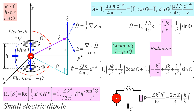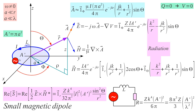We also have a dual counterpart to the small electric dipole — the small magnetic dipole, which is a loop. It is a little tricky to calculate the vector potential of the loop, but from it the electric field is very easy to obtain. Why? Because there are no charges here. This loop wire connects to the generator with a constant current flowing around it, so there are no sources or sinks of current and no charges. Therefore the gradient of the scalar potential is zero, and it is very easy to get the electric field, which has a radiation term.